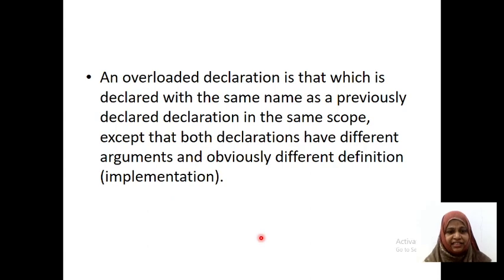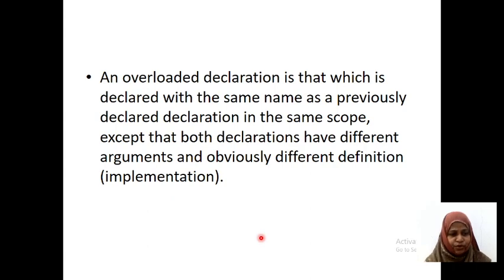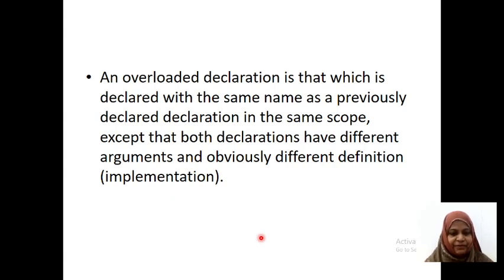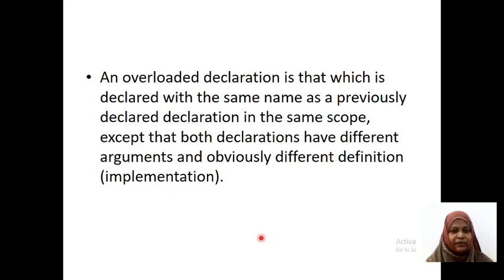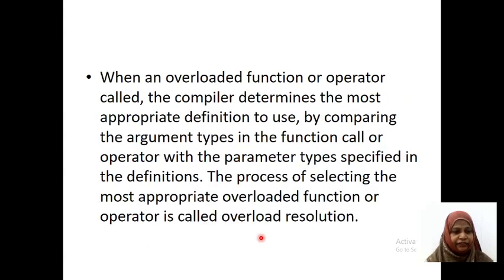In overloading, a declaration is made with the same name as a previously declared declaration in the same scope. In function overloading, we are going to pass different types of parameters — the parameter list must be different. When an overloaded function or operator is called, the compiler determines the most appropriate definition to use.